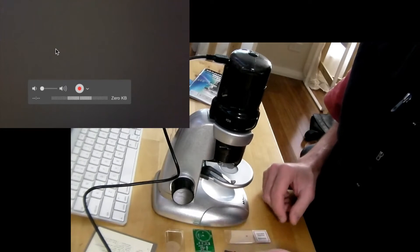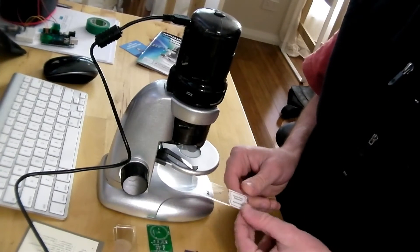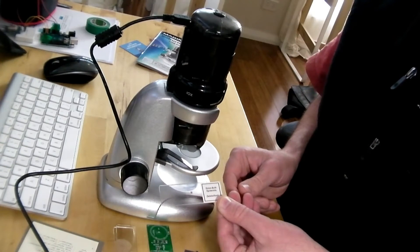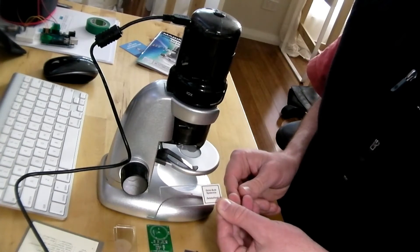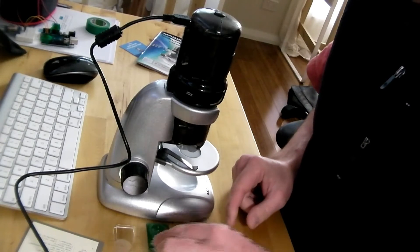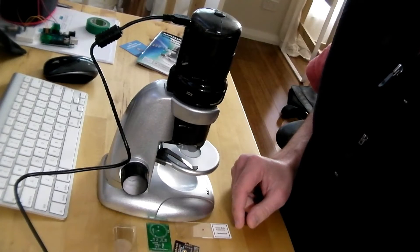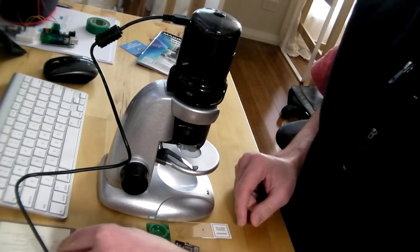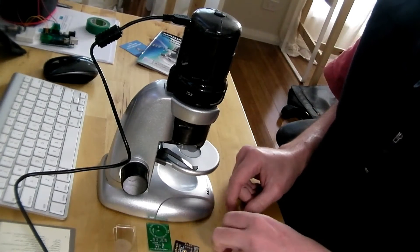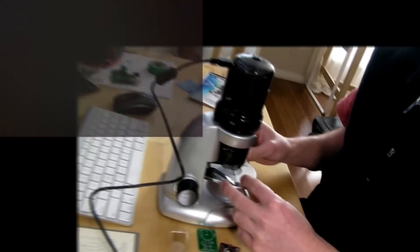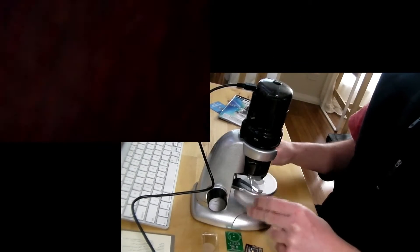I've got a few samples to look at. In the box, I got one of these. It's an onion bulb epidermis. Then, I've got a couple of PCBs to look at. There's a strand of hair. And I'll check the ink on my business card. Let's have a look at the onion bulb first. Slide that in here.